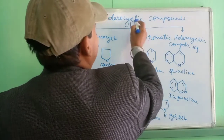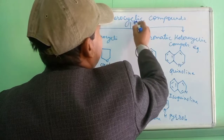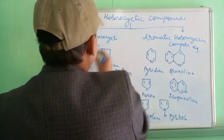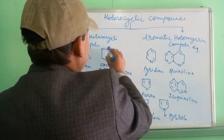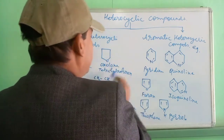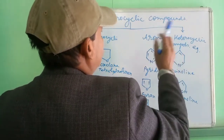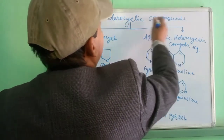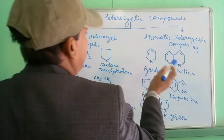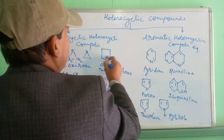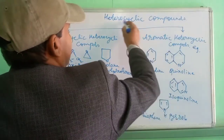Now, heterocyclic compounds are cyclic but contain hetero elements. 'Hetero' means not only carbon is present in the ring — elements like nitrogen, oxygen, or sulfur are present in the ring alongside carbon. The compound in which oxygen, nitrogen, or sulfur is present in the ring is said to be a heterocyclic compound. These are the examples of heterocyclic compounds.